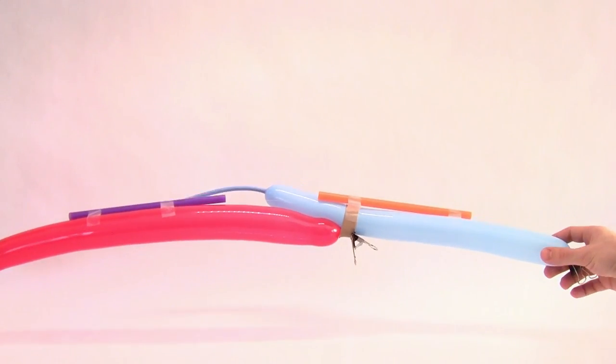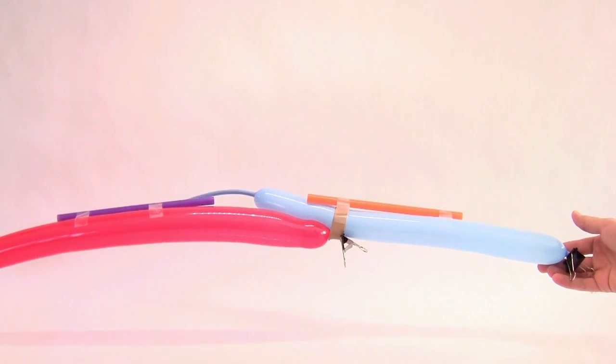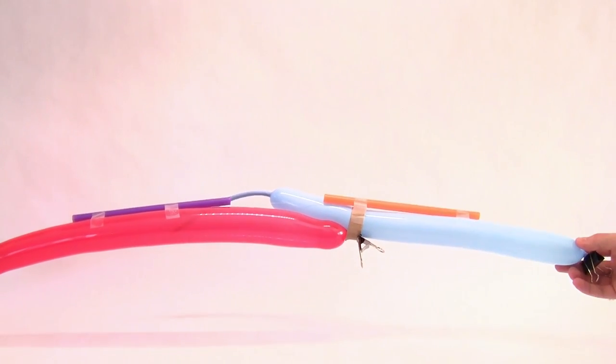Pull the balloons to one end of your string and prepare to release one or both binder clips depending on whether you're still using one on the first balloon.